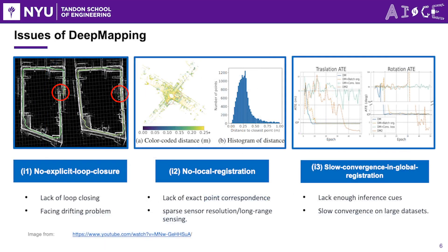However, the original DeepMapping paper had three major flaws that prevent adaptation in large-scale settings. First, no explicit loop closure: DeepMapping lacks an explicit loop closure mechanism and relies on gradual optimization of Lnet using temporal neighbors within each mini-batch, with Mnet controlling global map consistency. This incremental registration approach is prone to drifting, especially with a large number of frames.